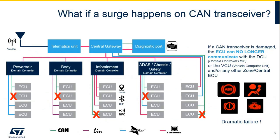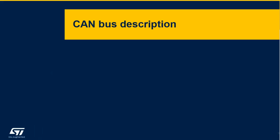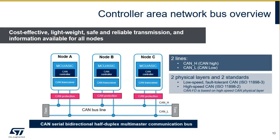Hello everyone, my name is Jean-Michel Sivonnet. I'm based in Tours, France, and I work in the application lab. I'm in charge of protection in the automotive segment — protection against ESD and over-voltage. With a few slides, we will briefly describe the CAN bus. Controller Area Network, CAN protocol, allows serial, bidirectional, half-duplex, multi-master communication between different ECUs through a multiplex bus, and the goal is to limit the number of wires. Each node is able to send and receive messages, but not at the same time. This protocol was developed by Bosch in the 1980s.